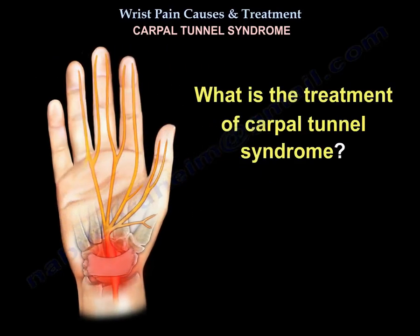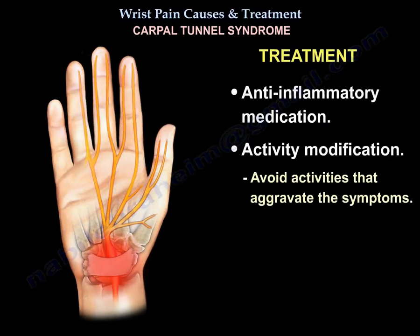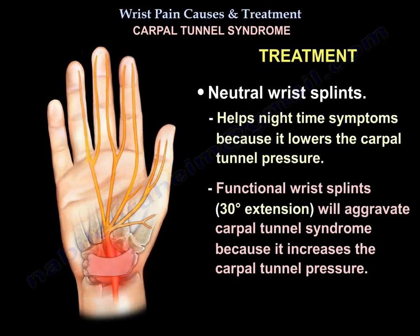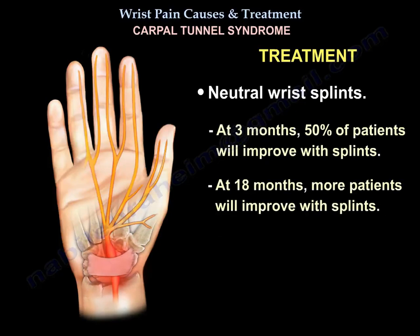What is the treatment of carpal tunnel syndrome? Treatment is usually anti-inflammatory medication, activity modification, and avoiding activities that aggravate symptoms. Neutral rest splints help nighttime symptoms because they lower carpal tunnel pressure. Note that functional rest splints at about 30 degrees of extension will aggravate carpal tunnel syndrome by increasing pressure. At 3 months, 50% of patients will improve with splints, and at 18 months, more patients will improve with splints.